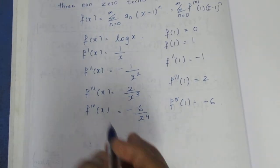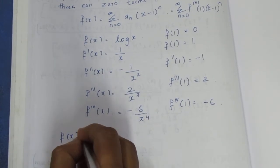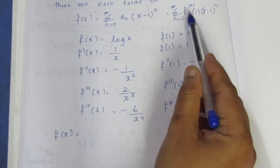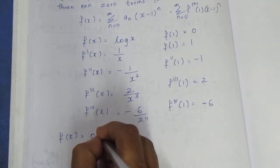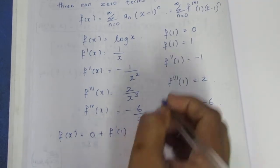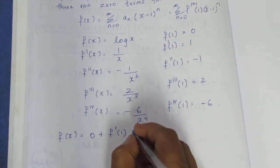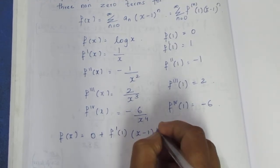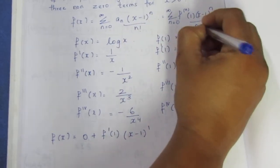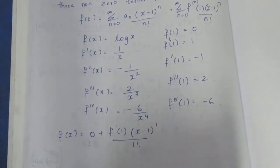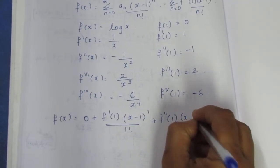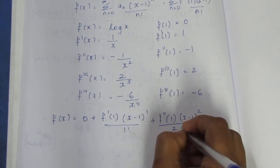Now we expand. F of x is equal to, according to the formula: f of 0 equals 0 for the first term. Plus the second term: f first derivative of 1 times (x minus 1) to the power 1 by 1 factorial. Plus f double dash of 1 times (x minus 1) to the whole power 2 by 2 factorial.